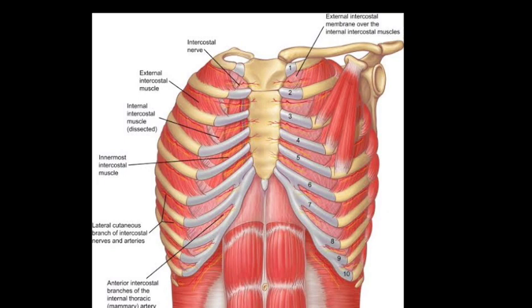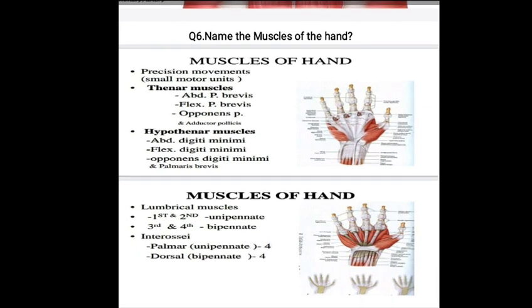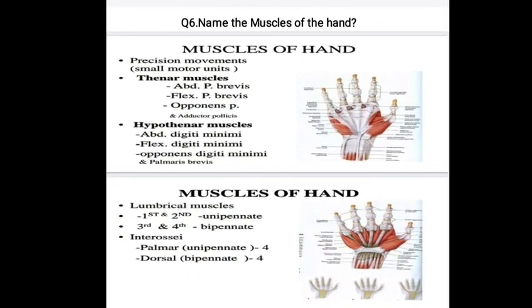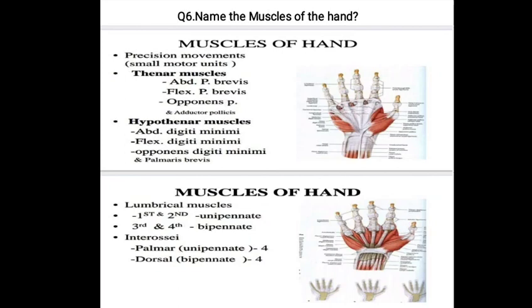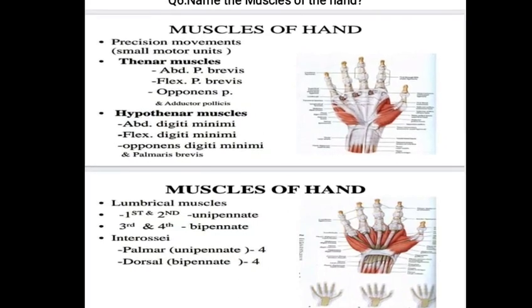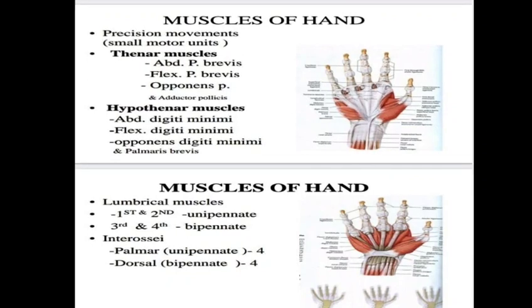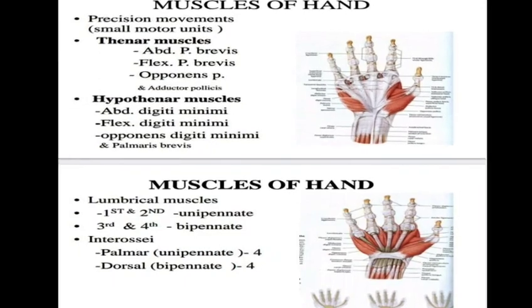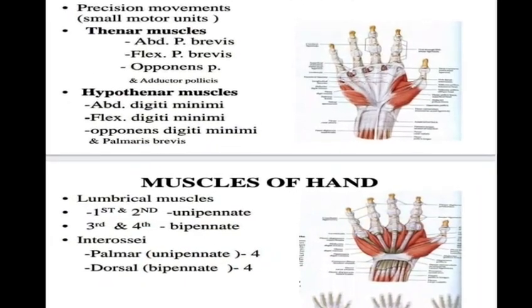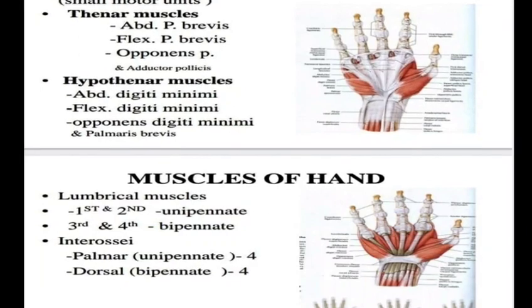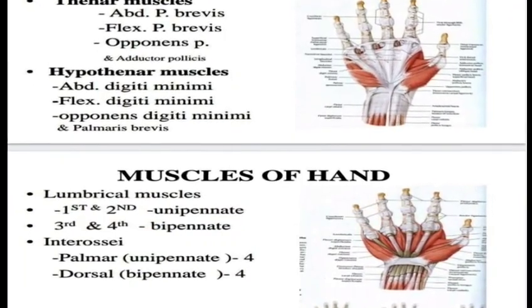A diagram of the intercostal space is provided — you have to draw it. Question number six: name the muscles of the hand. Four muscle groups comprise the intrinsic hand muscles: thenar, hypothenar, lumbricals, and interossei. There are over 30 muscles in the hand working together in a highly complex way; movements of the hand are mostly initiated by muscles in the forearm.